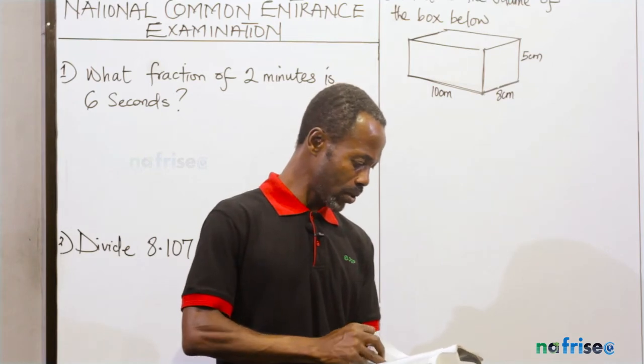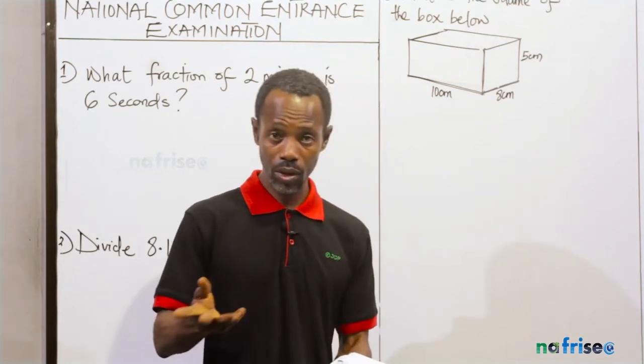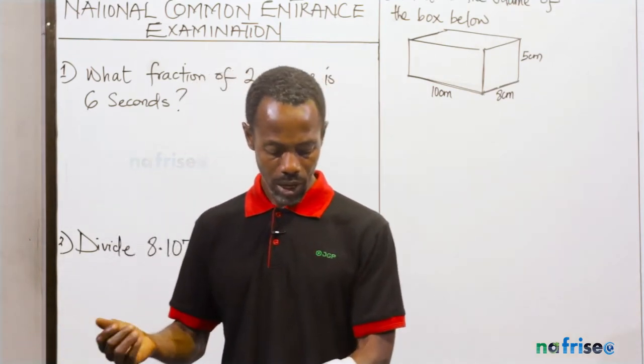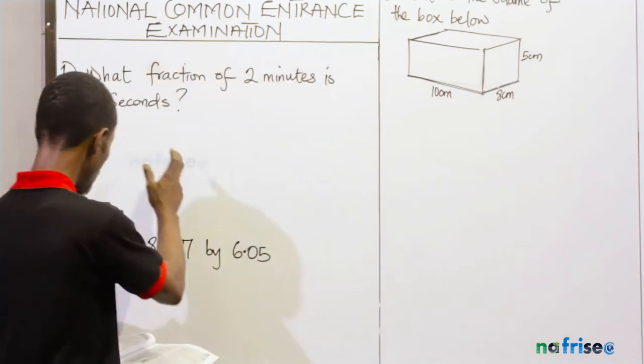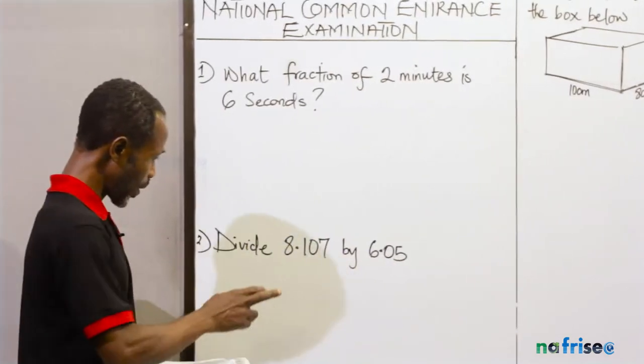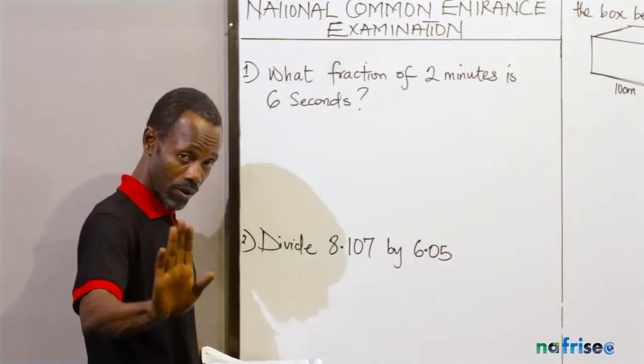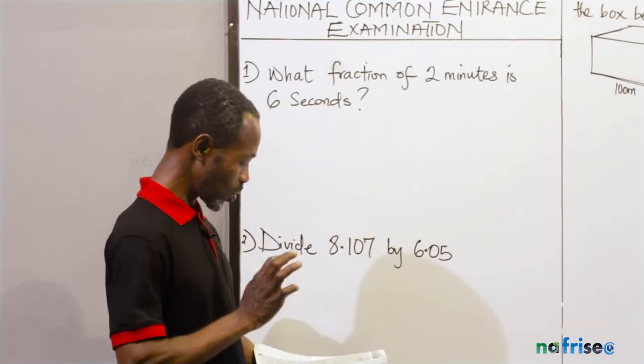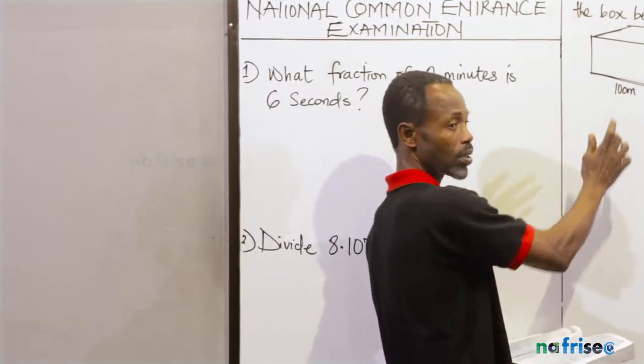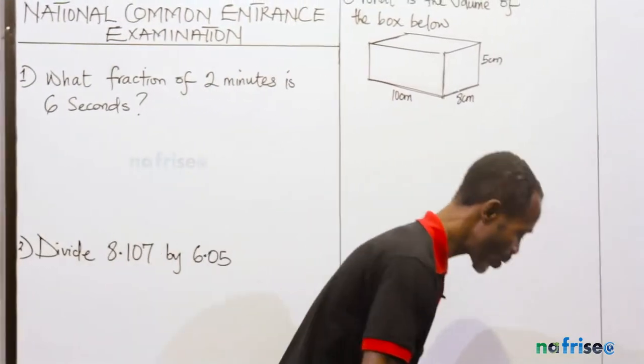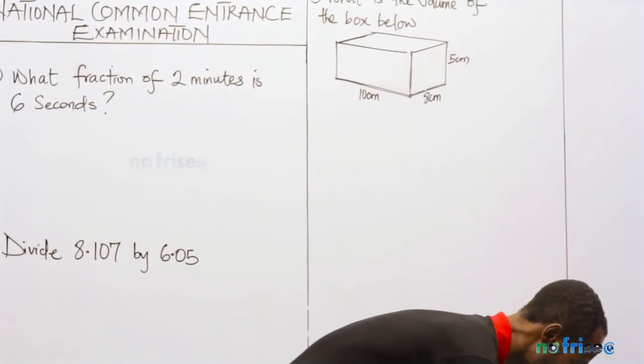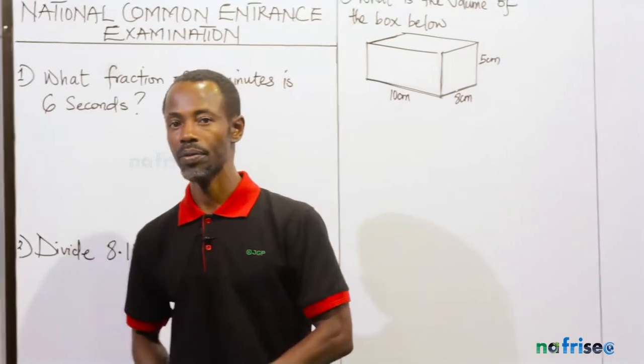So if you look at your test book, you will find out that in the second one, we have 'what fraction of 2 minutes is 6 seconds.' I have that one here. And they say we should divide 8.107 by 6.05. I'm going to solve it. Don't be afraid. So let us now do what we do best. Let's simplify the solution. Are you ready?